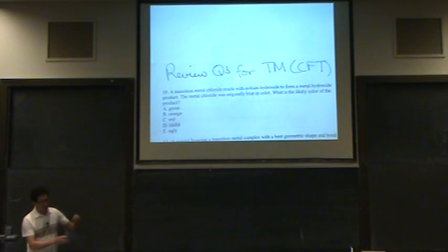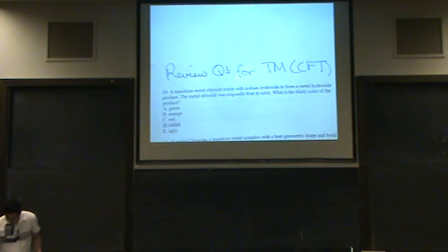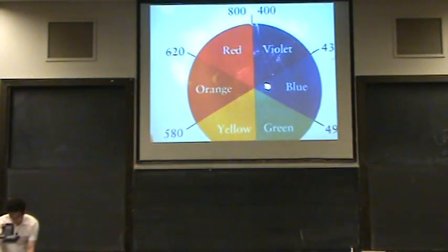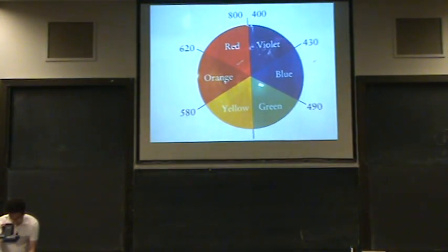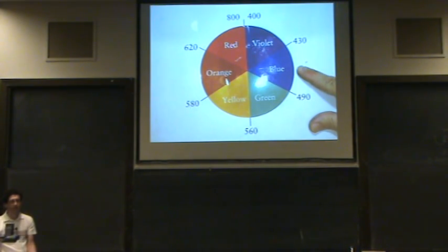So again, delta is going up, that means lambda is going down. We know this originally starts at the blue color. Which way did I say lambda is going? Down.